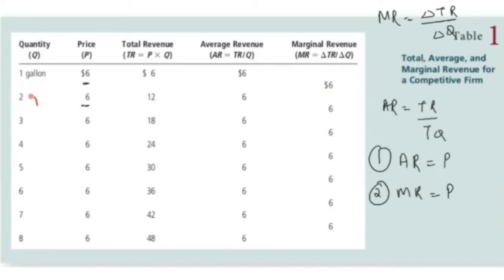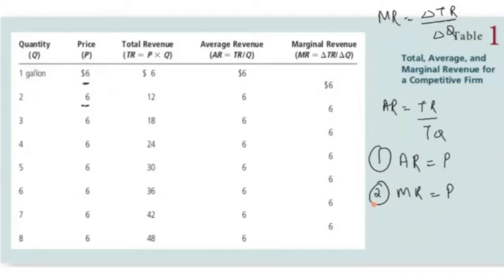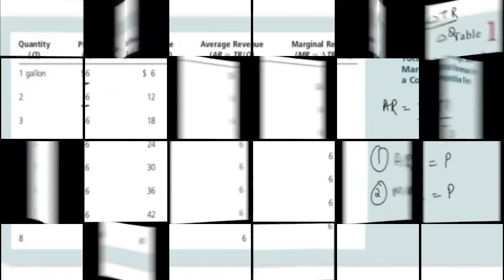When quantity increases from two to three, revenue goes from 12 to 18 — a difference of six. Change in total revenue is six and change in quantity is one, so marginal revenue is again six. When you increase quantity by one unit, revenue also increases by six dollars. So the two important results are: for a competitive firm, average revenue equals price, and marginal revenue also equals price.